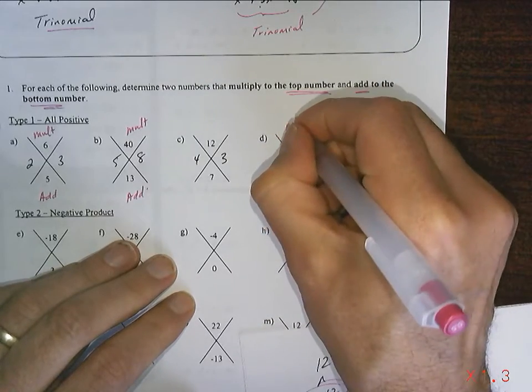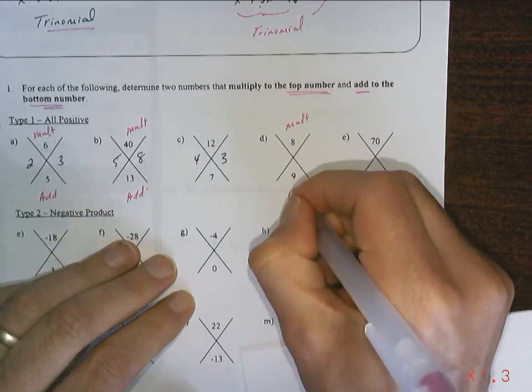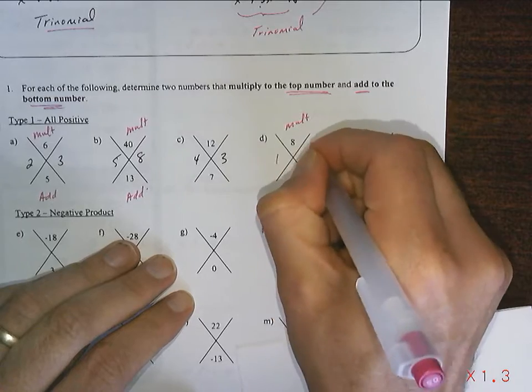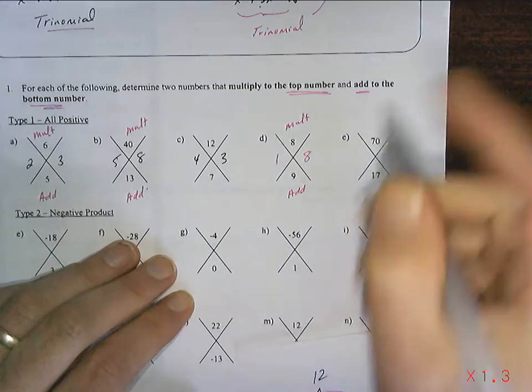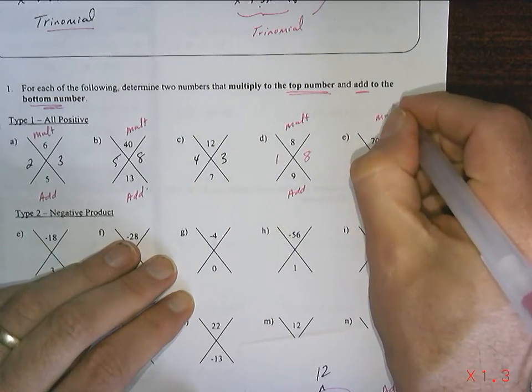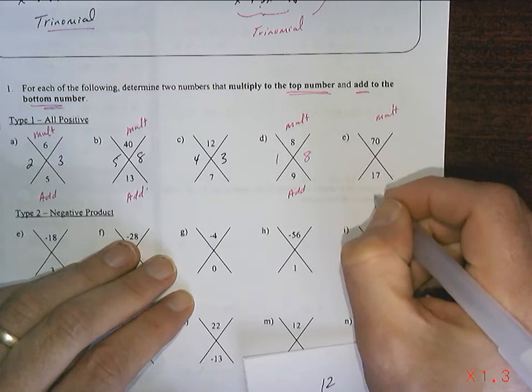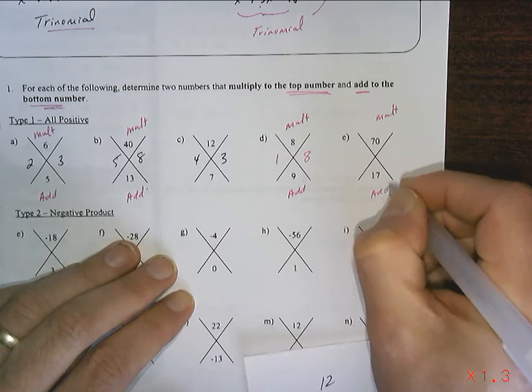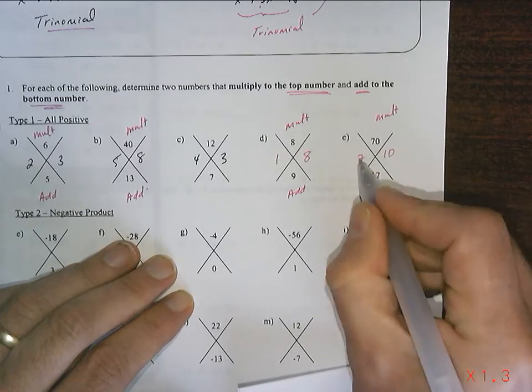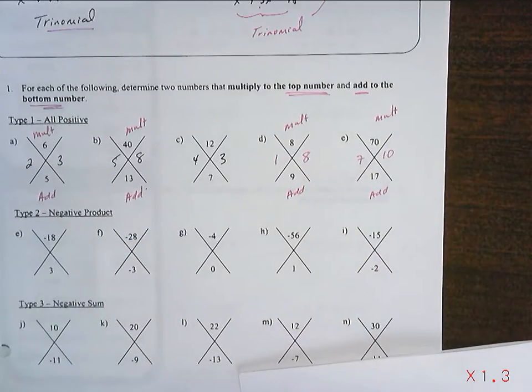We continue. We're looking for two numbers that multiply to give 8 and add to give 9. 1 and 8 work. I'm looking for two numbers that multiply to give 70 and add to give 17. I'm thinking 7 and 10. Let's see if it works. 70, 17. It works.